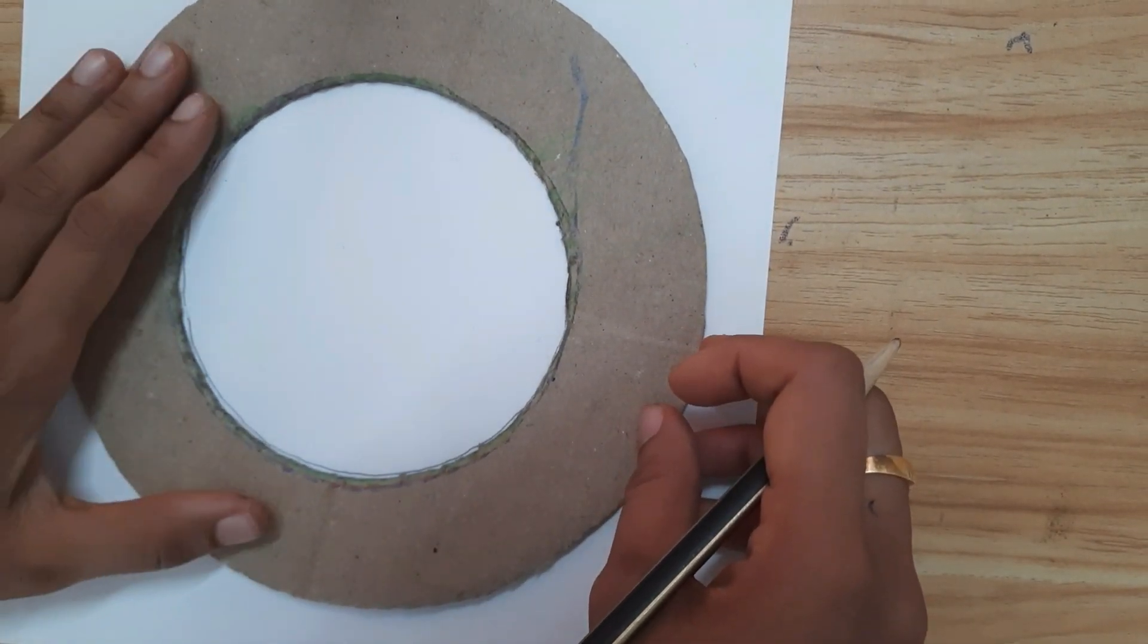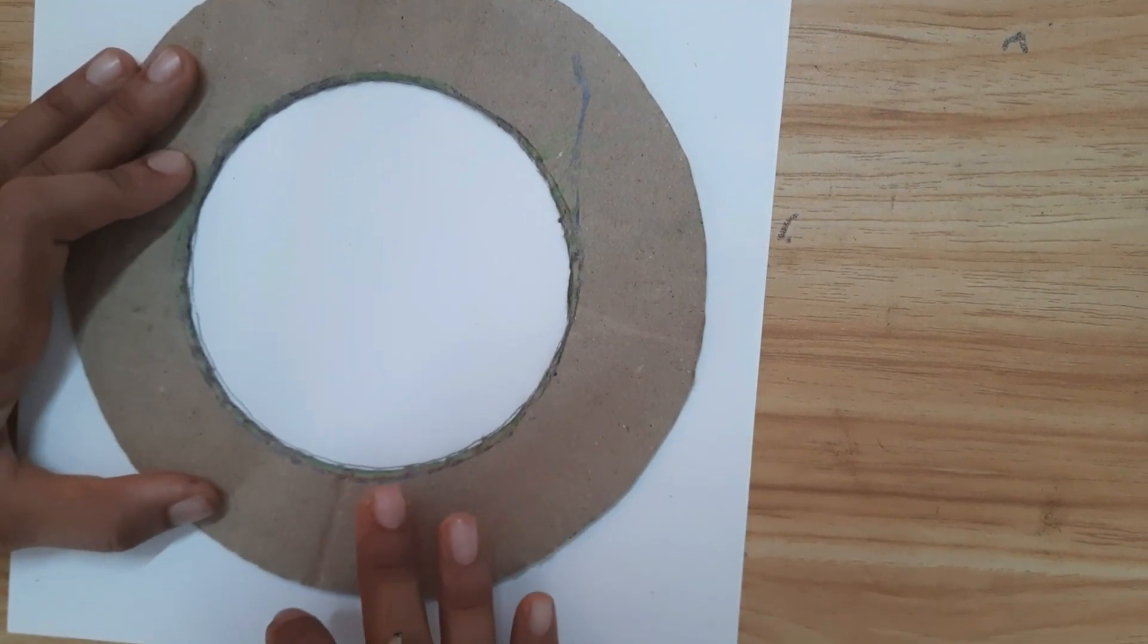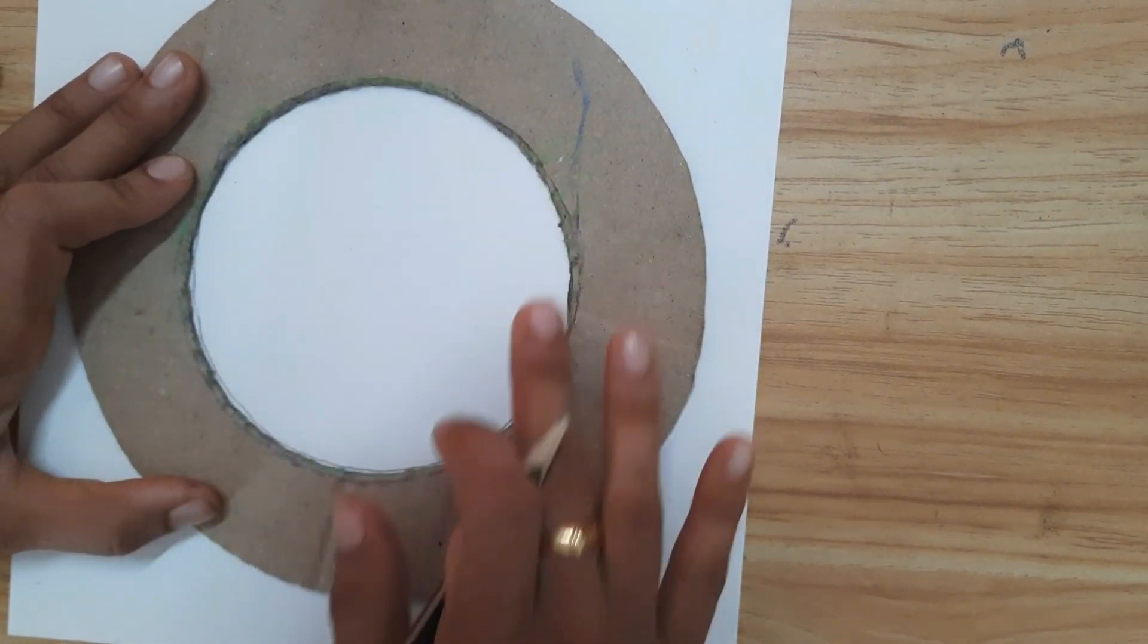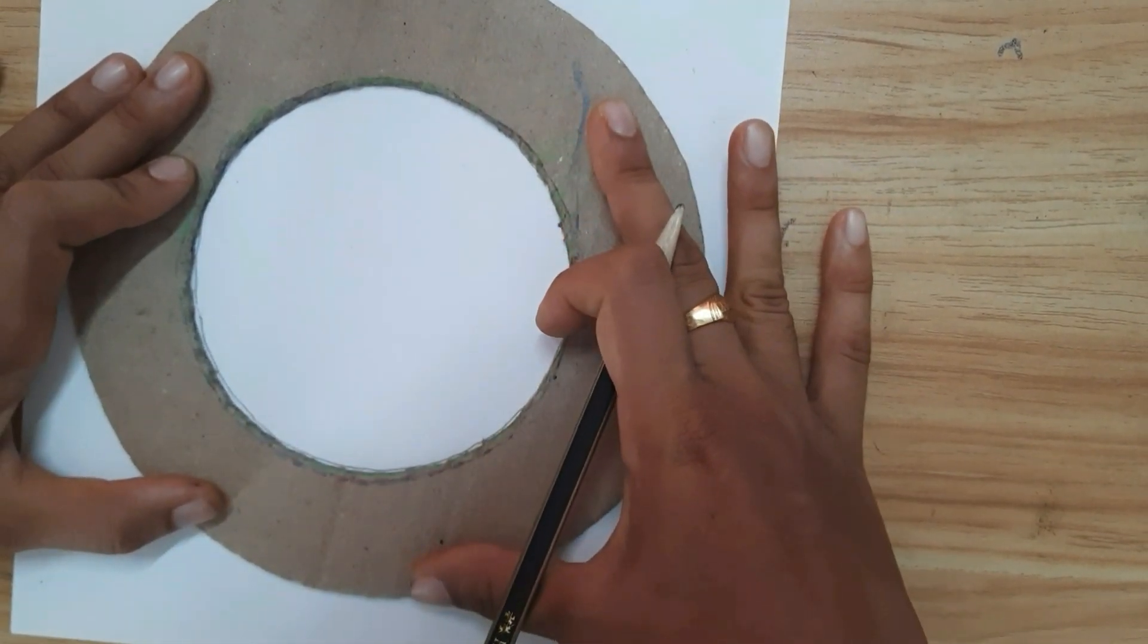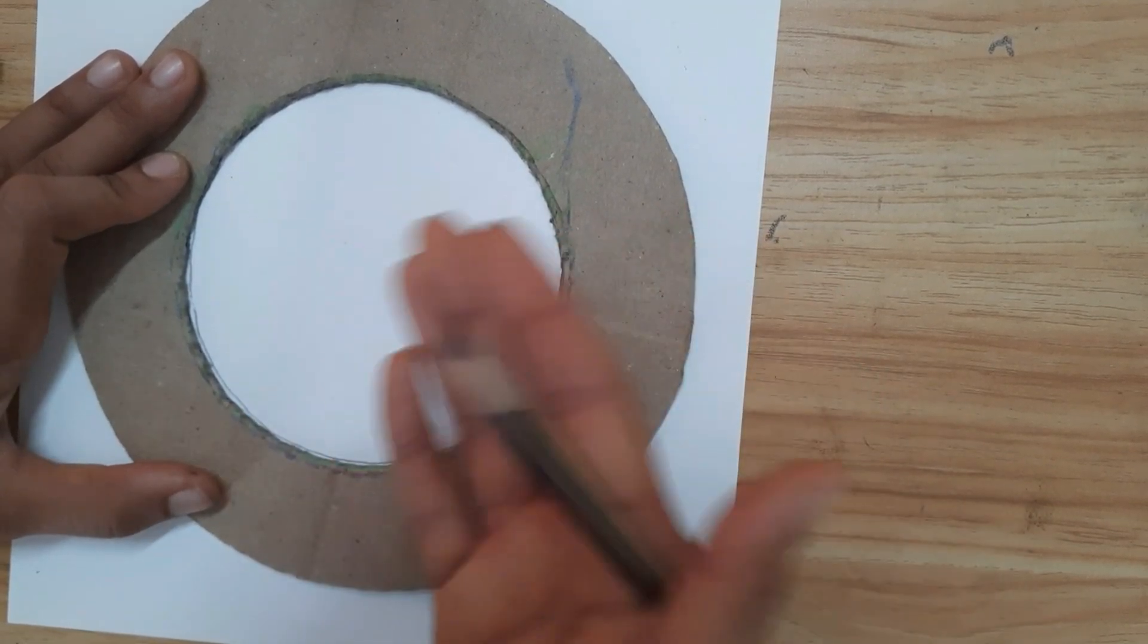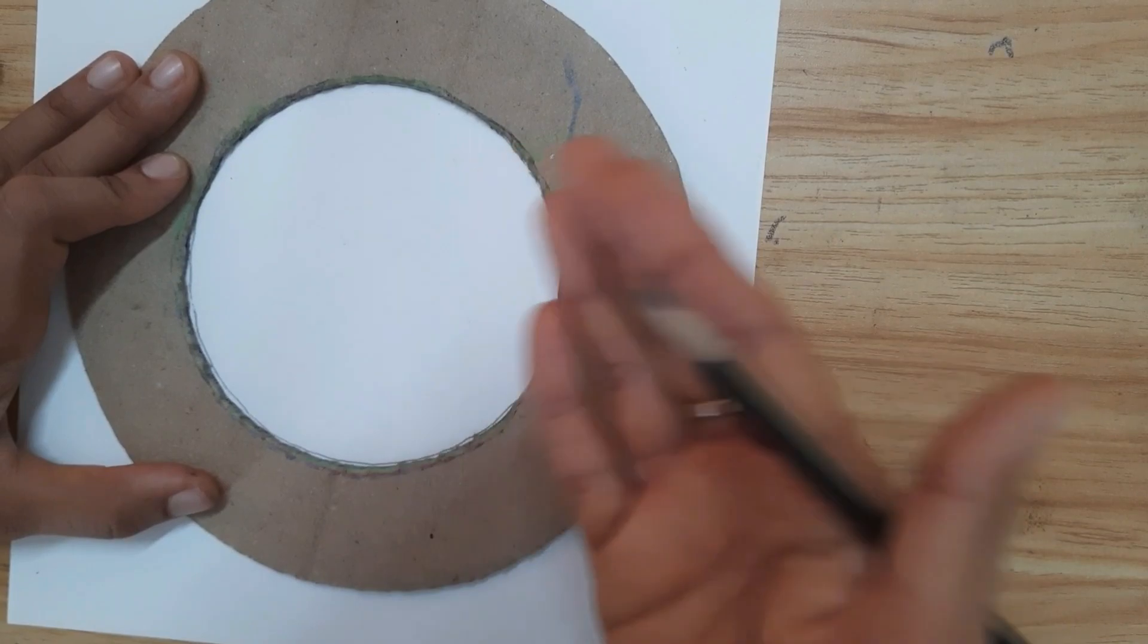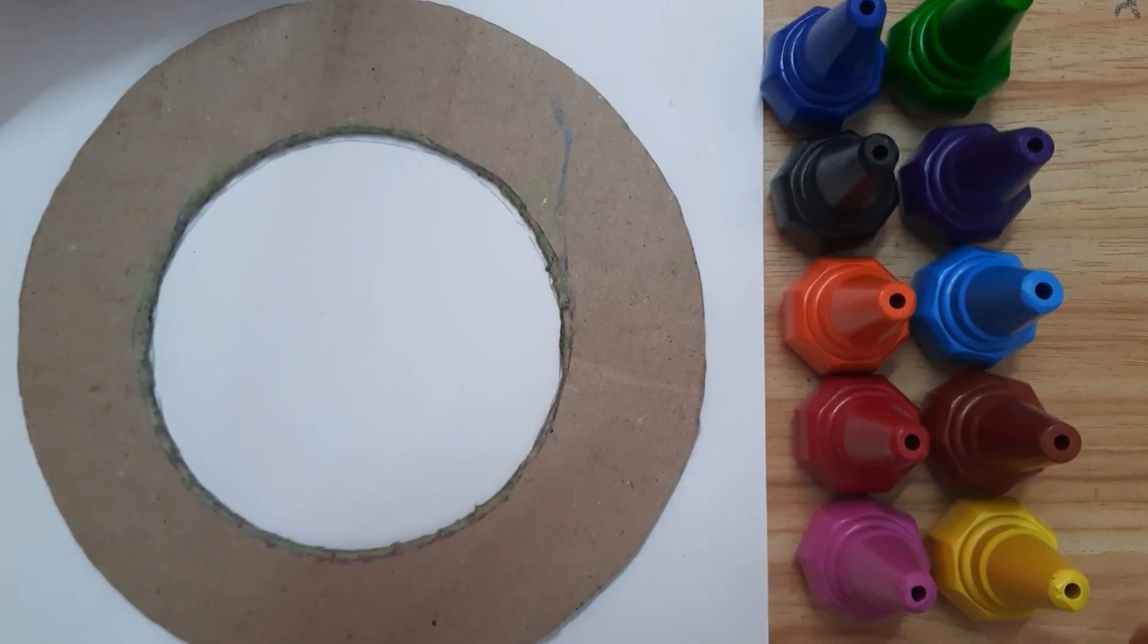Now ask the child to color the circle. This cardboard is kept so that the child realizes he or she should not color outside the circle. I will be using these colors - these are crayons. Let the child choose any color of his or her choice and start coloring.